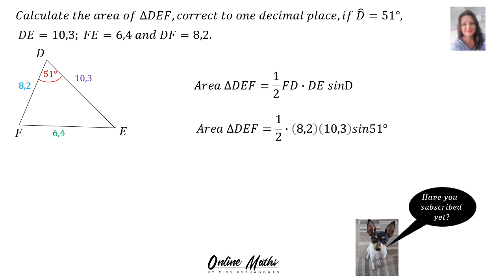You slot that into your calculator with no shift buttons used — it's just straightforward, punch all the numbers in. The area of triangle DEF is 32.8. There were no units given, so you simply say units squared.